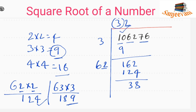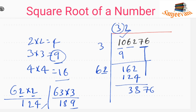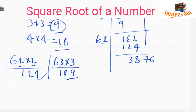Next, we drop the next pair, which is 76, giving us 3876. Previously we doubled 3 to get 6; now the current result is 32, so we double 32 to get 64.